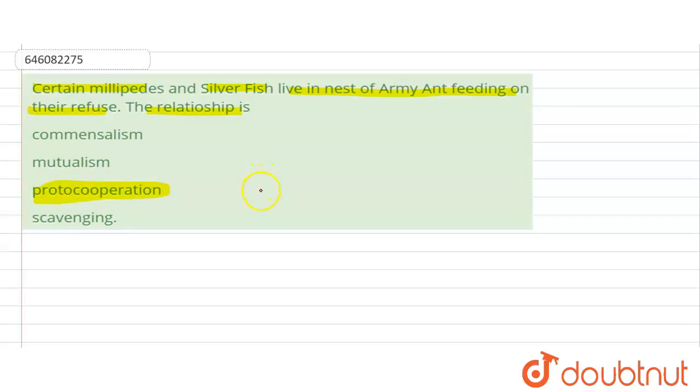What is commensalism? Commensalism means one organism is benefited, whereas the other organism has a neutral change. That is, there is no effect, neither there is benefit nor there is loss because of the living of that organism.